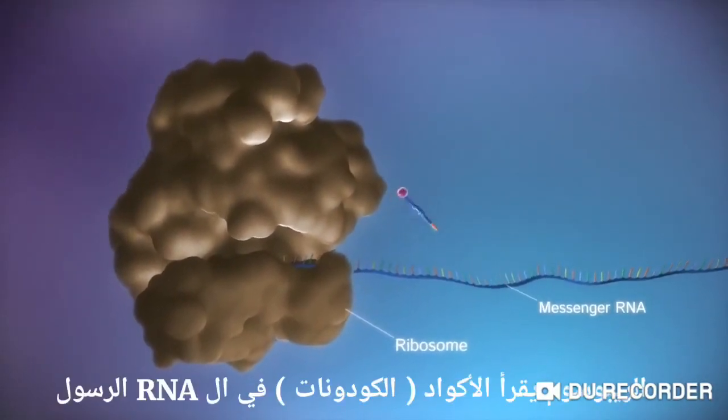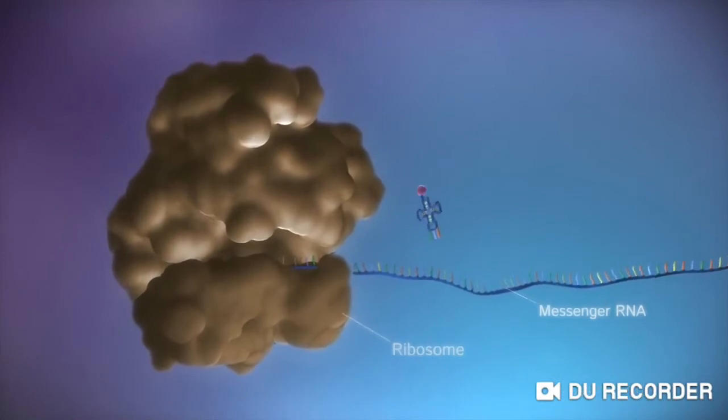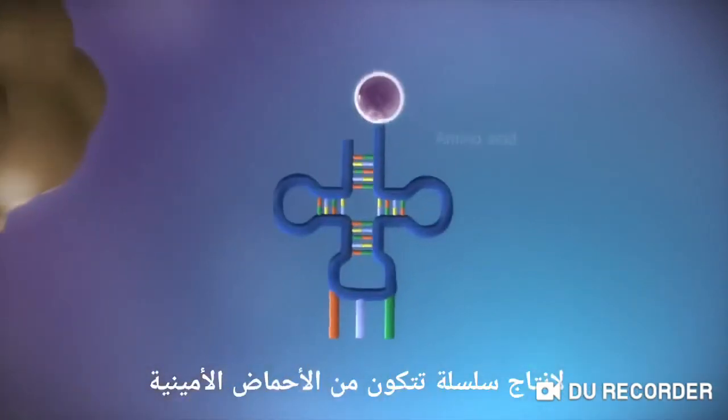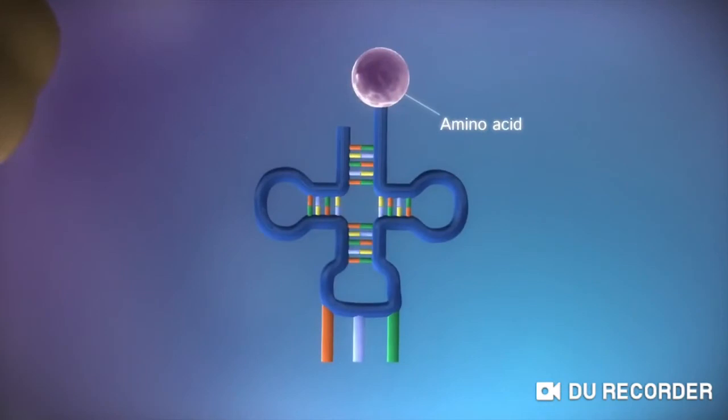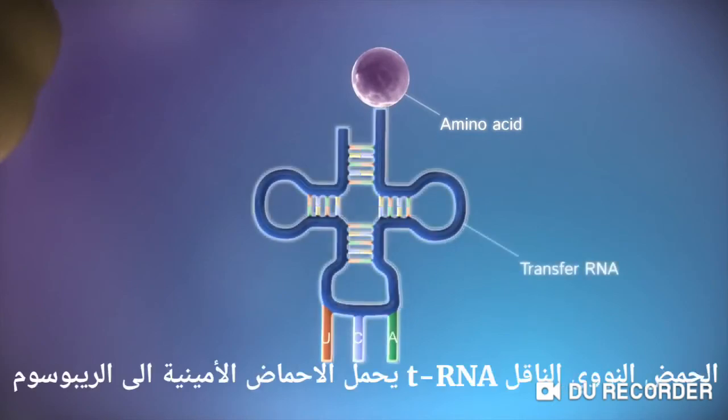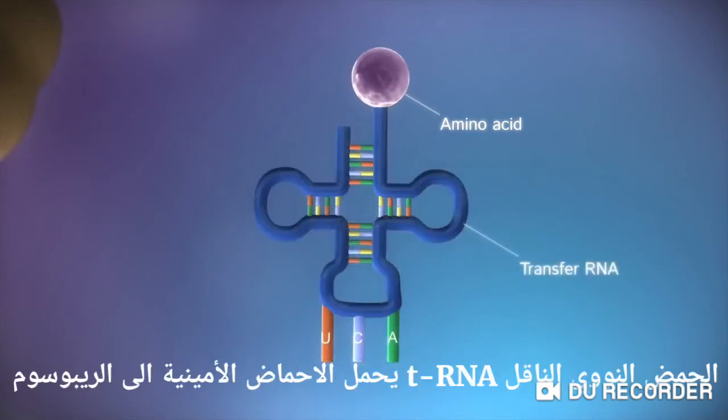The ribosome reads the code in the messenger RNA to produce a chain made up of amino acids. There are 20 different types of amino acid. Transfer RNA molecules carry the amino acids to the ribosome.